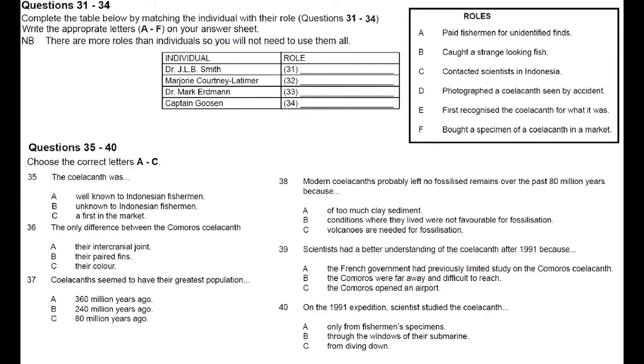Today, we're going to look at the coelacanth. The discovery of the coelacanth has been compared to finding a dinosaur walking around today, over 85 million years after it went extinct. The story began a few days before Christmas in 1938, when the first living coelacanth was discovered off the east coast of South Africa, at the mouth of the Chelumna River.